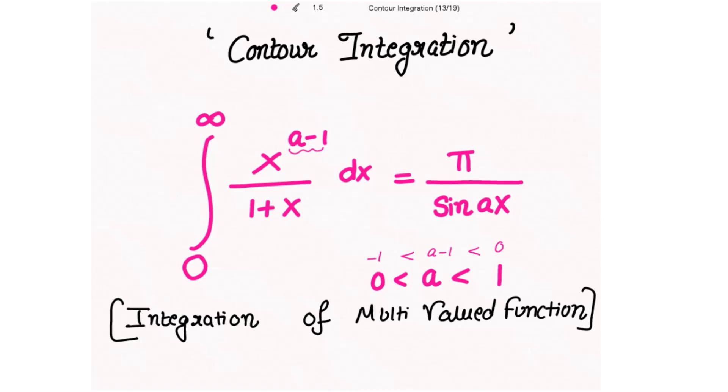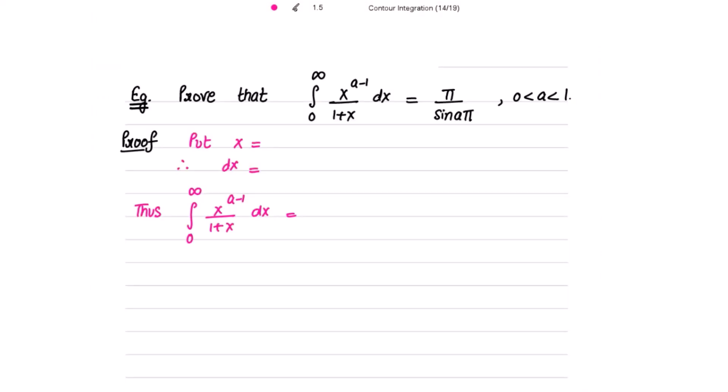Let's start with the proof. We need to show that the integral from 0 to infinity of x^(a−1) over (1+x) dx equals π over sin(aπ), where a is between 0 and 1. We put x = e^t, so dx = e^t dt.